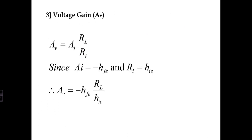Similarly, for voltage gain, from exact analysis we know AV equals AI times RL divided by RI. We calculated AI as minus HFE and RI as HIE. Substituting these values, we get AV equals minus HFE times RL divided by HIE. This is the voltage gain.